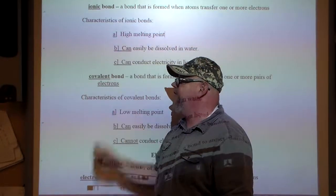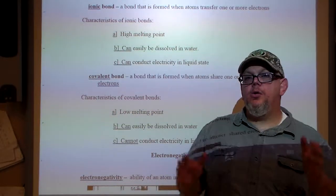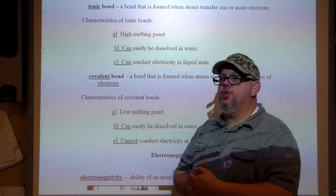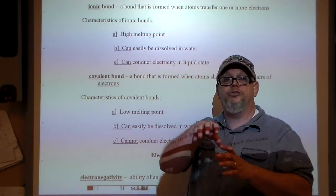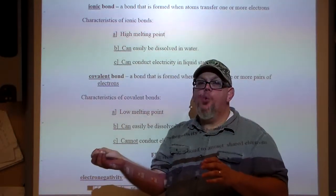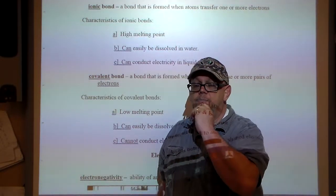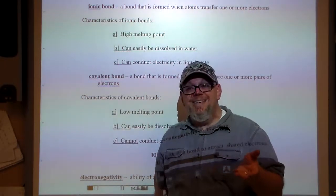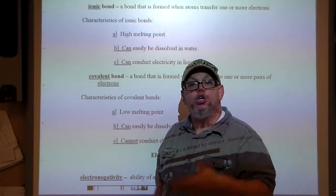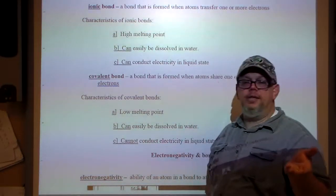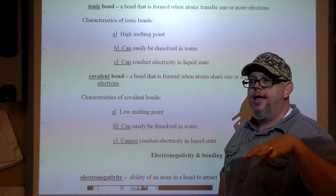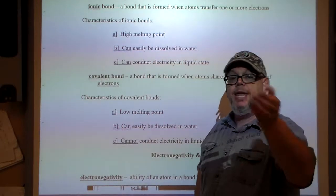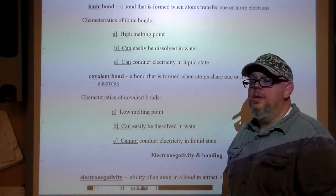The second type of bond is the covalent bond. Covalent is a little bit different in that the electrons are shared between the two atoms that join together, as opposed to transferring one electron from one atom to the other. Covalent bonds have a lower melting point — they can melt more easily. Sugar is a great example of something covalently bonded, and it does not conduct electricity in a liquid state, but it can dissolve pretty easily into water.